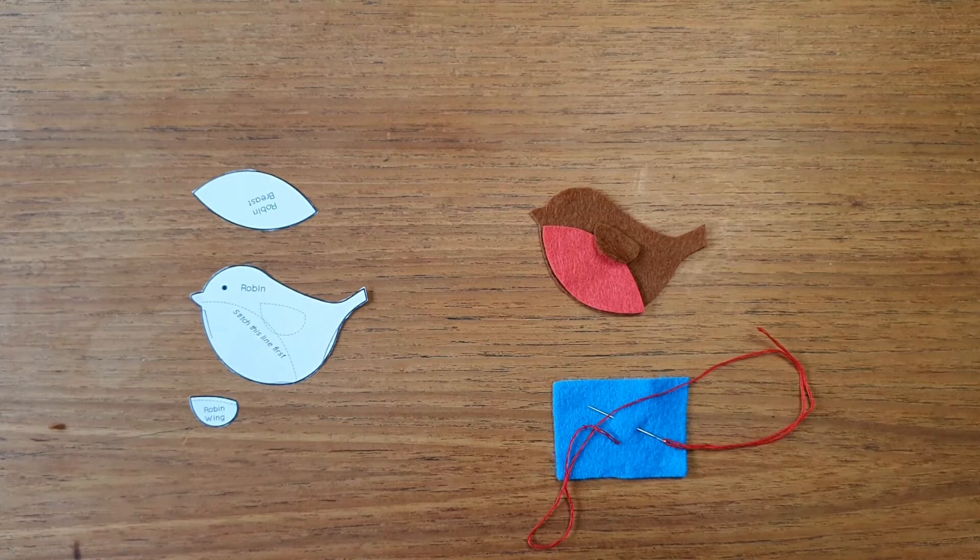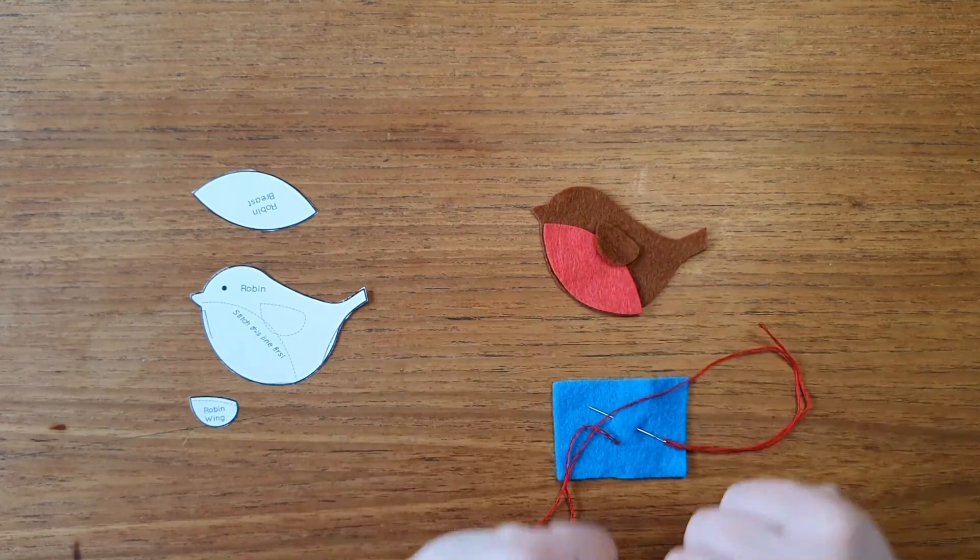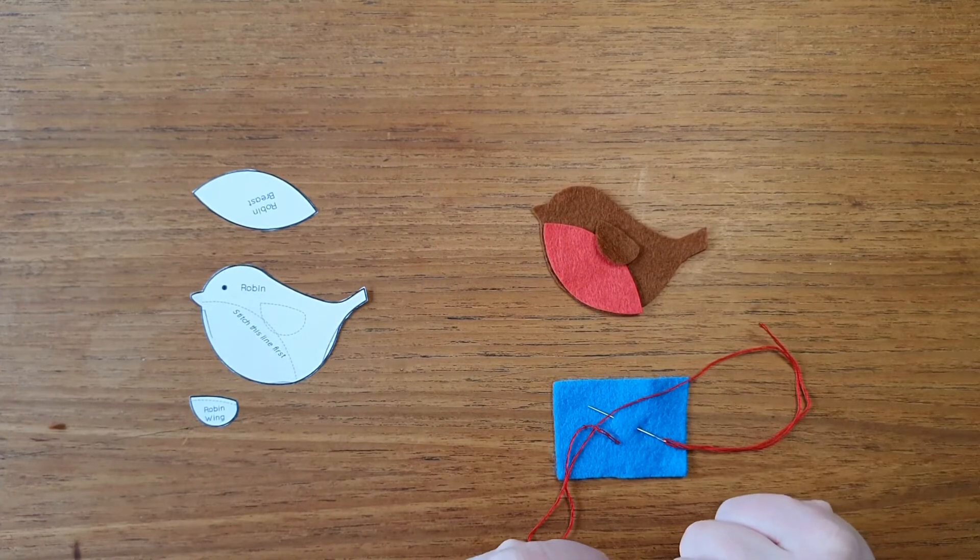After I do that, I'll stitch a little eye on, usually with a little bit of black thread and a few stitches.